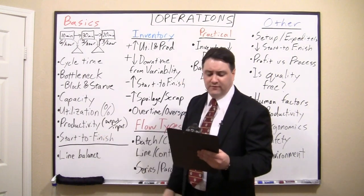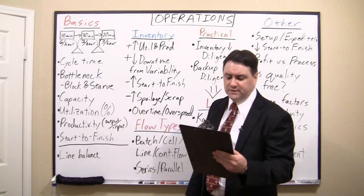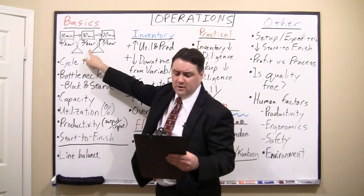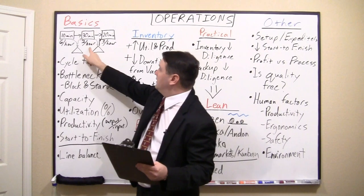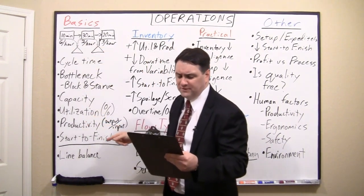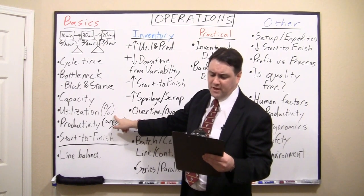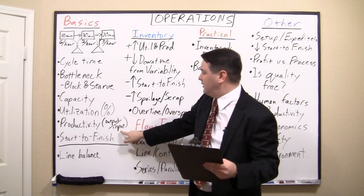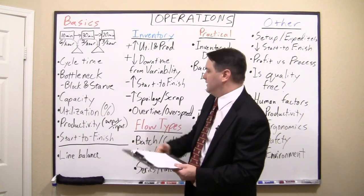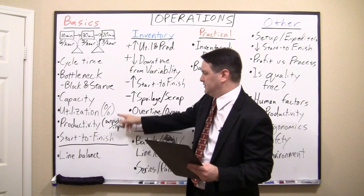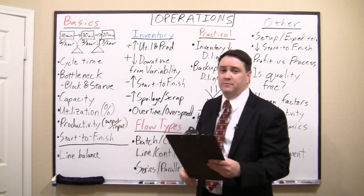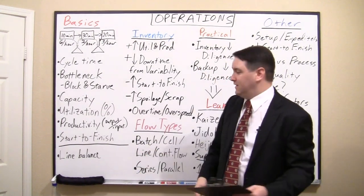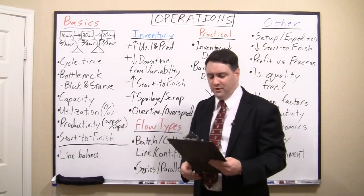The next concept is productivity — a ratio of outputs to inputs. For example, we're making 2 units per hour out of 3 work hours, so that's 0.66 units per work hour in terms of productivity. You can also flip that around. In the auto industry, productivity is measured as hours per vehicle — how many work hours does it take? That's the input versus output ratio.